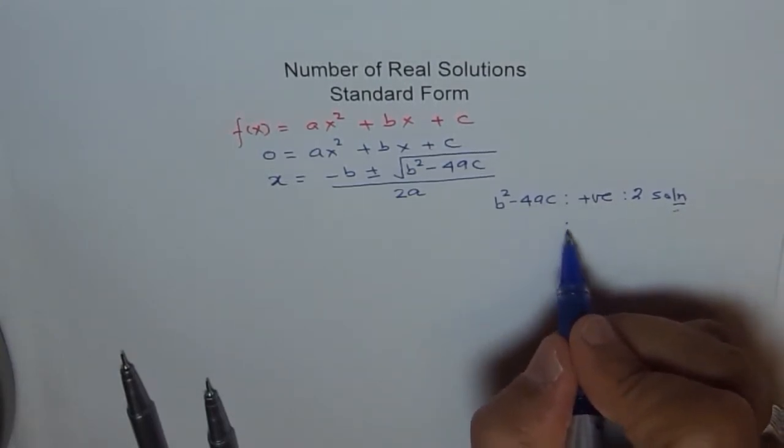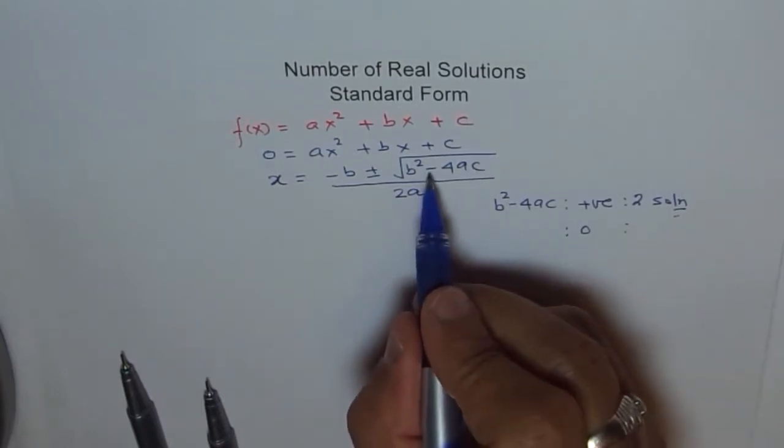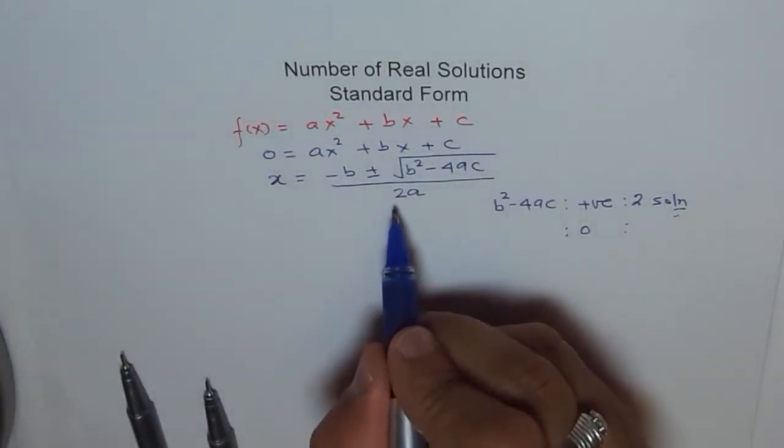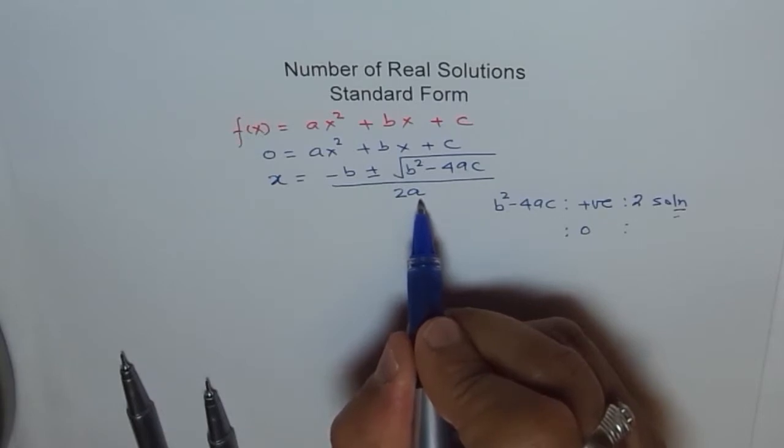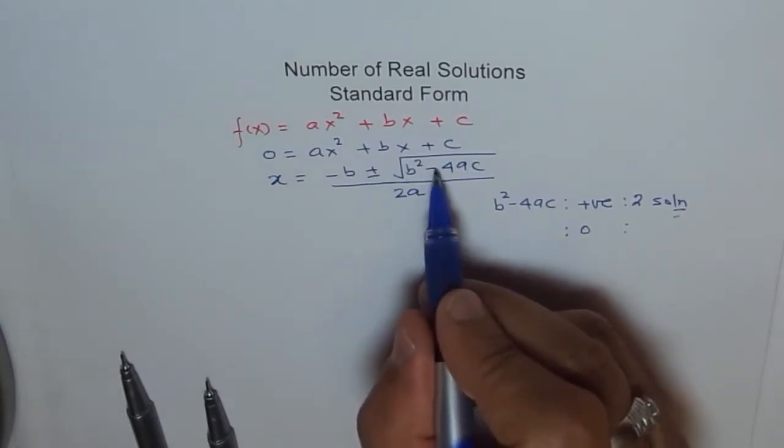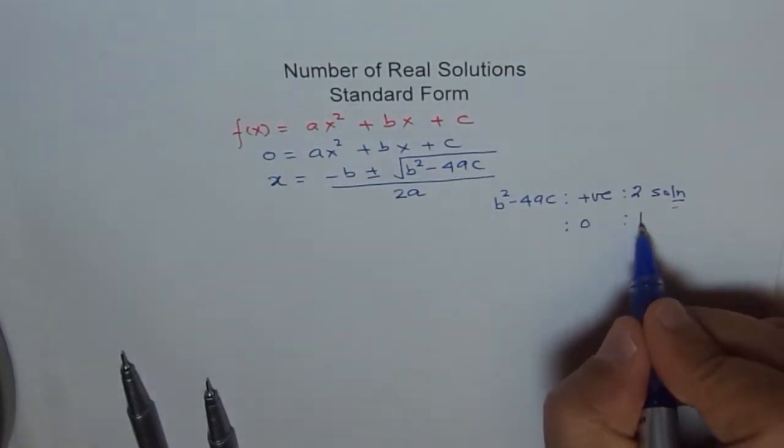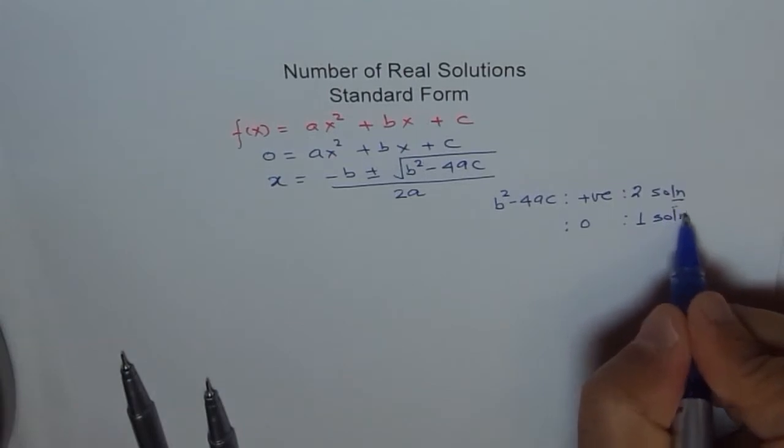If b square minus 4ac is zero, then if this is zero, then we are left with minus b by 2a. Only one value, not plus minus anything. It is plus minus zero. So we are left with minus b by 2a, so we get only one solution.